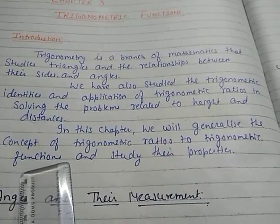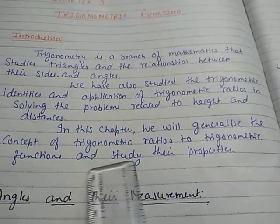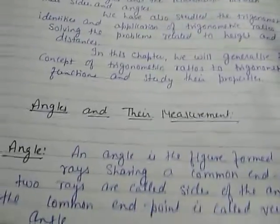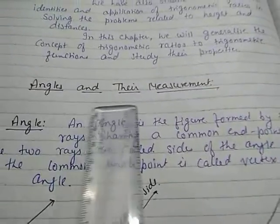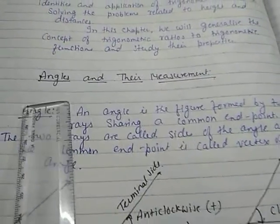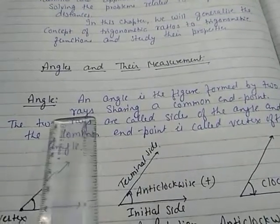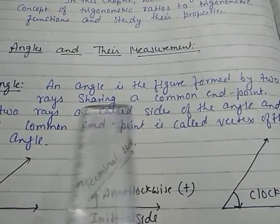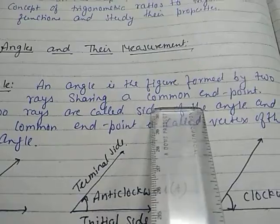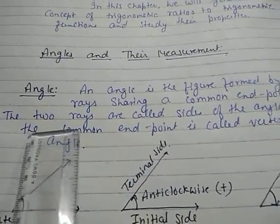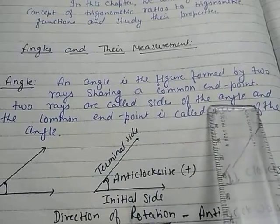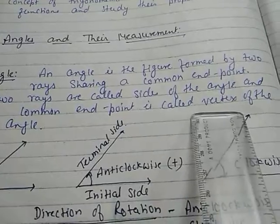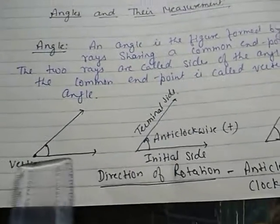Functions that you already studied in Chapter 2, that chapter was Relations and Functions — and we will study their properties also. Now we have to start with the concept of angles and their measurement. An angle is the figure formed by two rays sharing a common endpoint. The two rays are called the sides of the angle and the common endpoint is called the vertex of the angle.